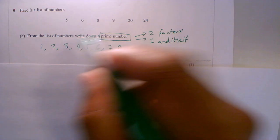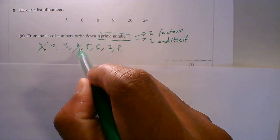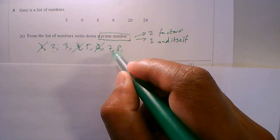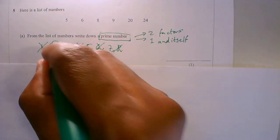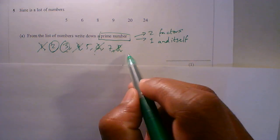It has to have two factors, so it cannot be one. So you've got 2, then all of the other even numbers are crossed out because 2 goes into them. So 2 is a prime number, 3 is a prime number, all of the multiples of 3 I can cross out.